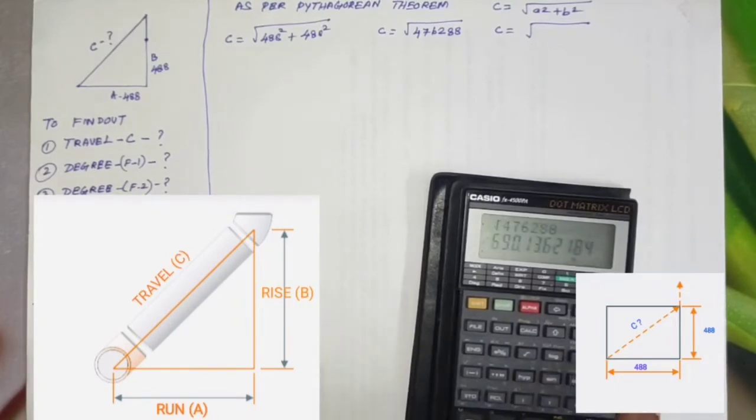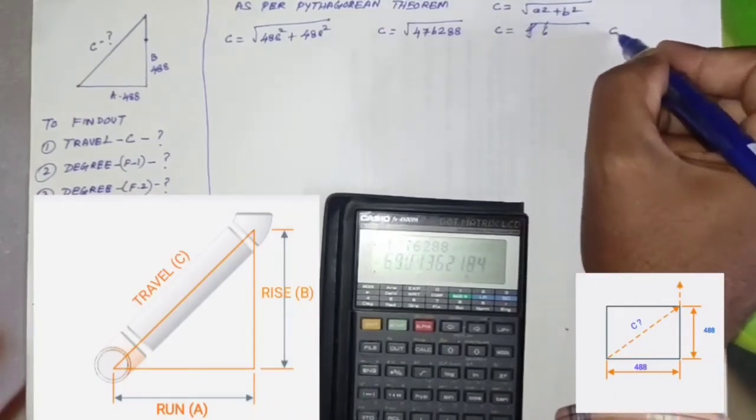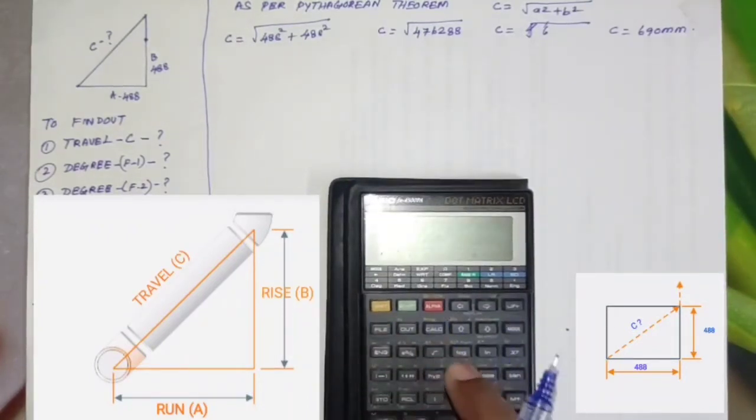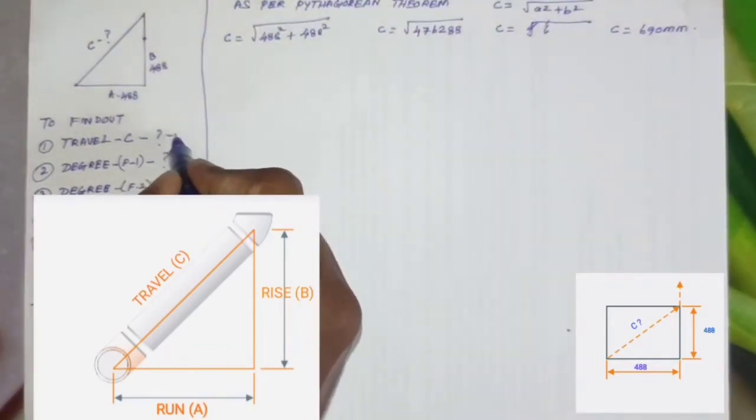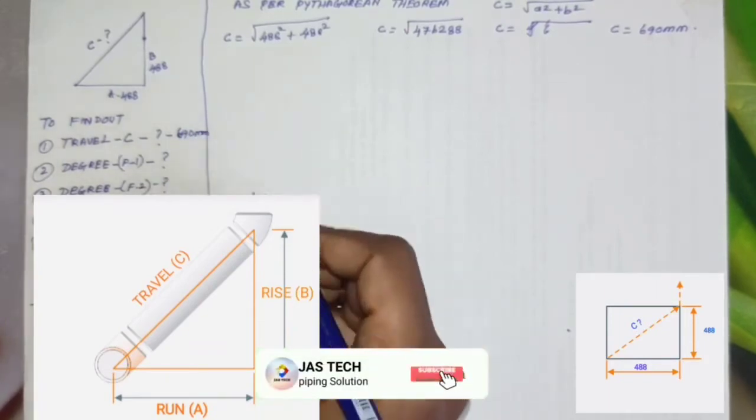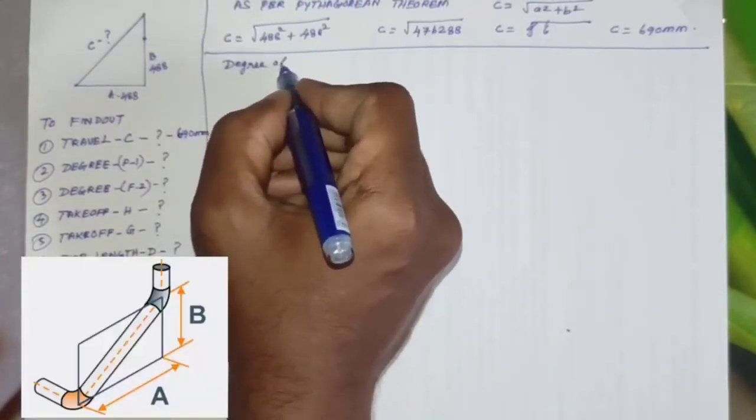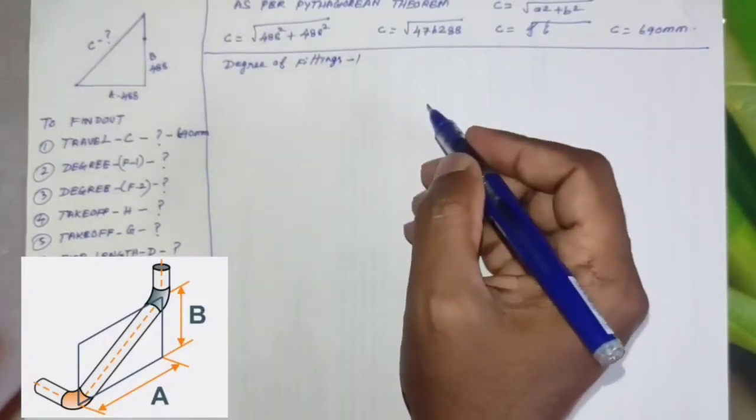476288, it will come 690. Directly put the root from this calculator: root bracket open 488 whole square plus 488 whole square, it will come result 690 mm. So travel C equals 690 mm. Second one: degree of fittings one.